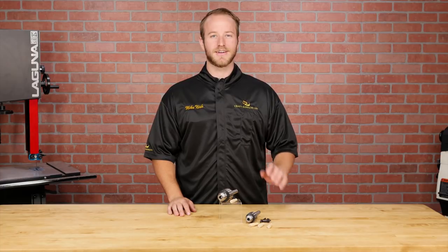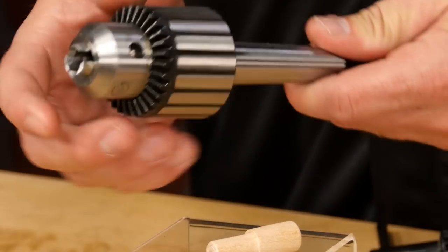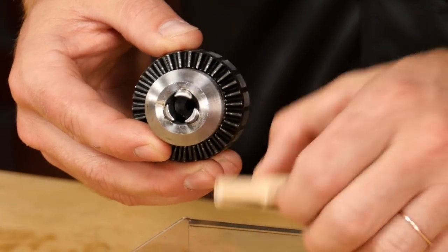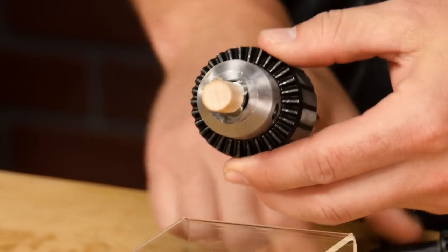Lastly, let's cover the dowel chuck. The jaws of this drill chuck have been precisely bored out so they make contact around the entire circumference of either a three-eighths or a half-inch dowel.